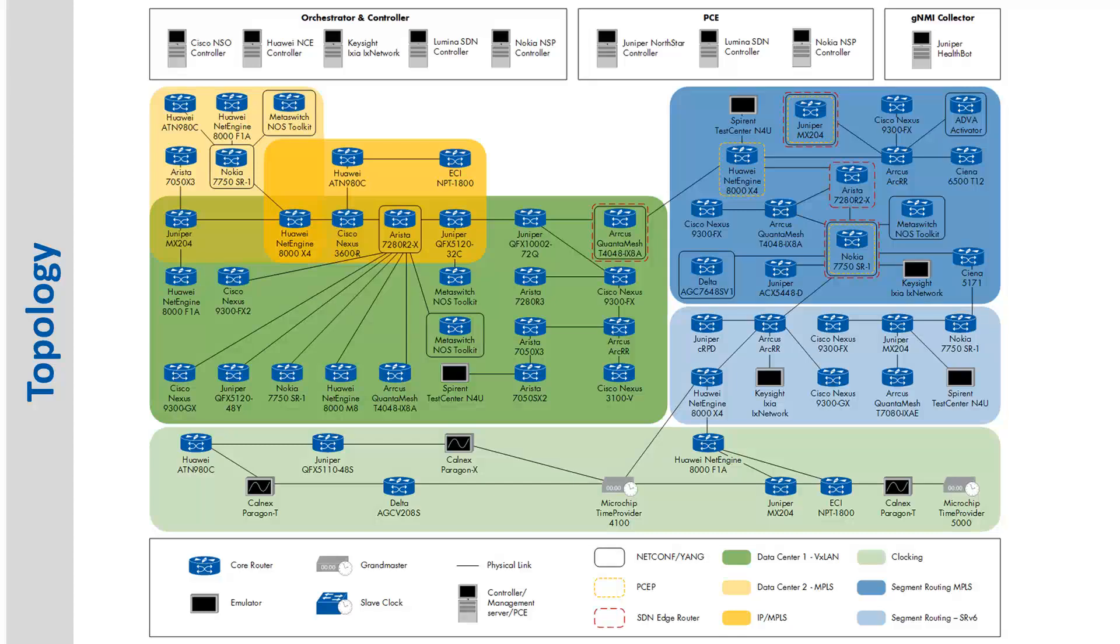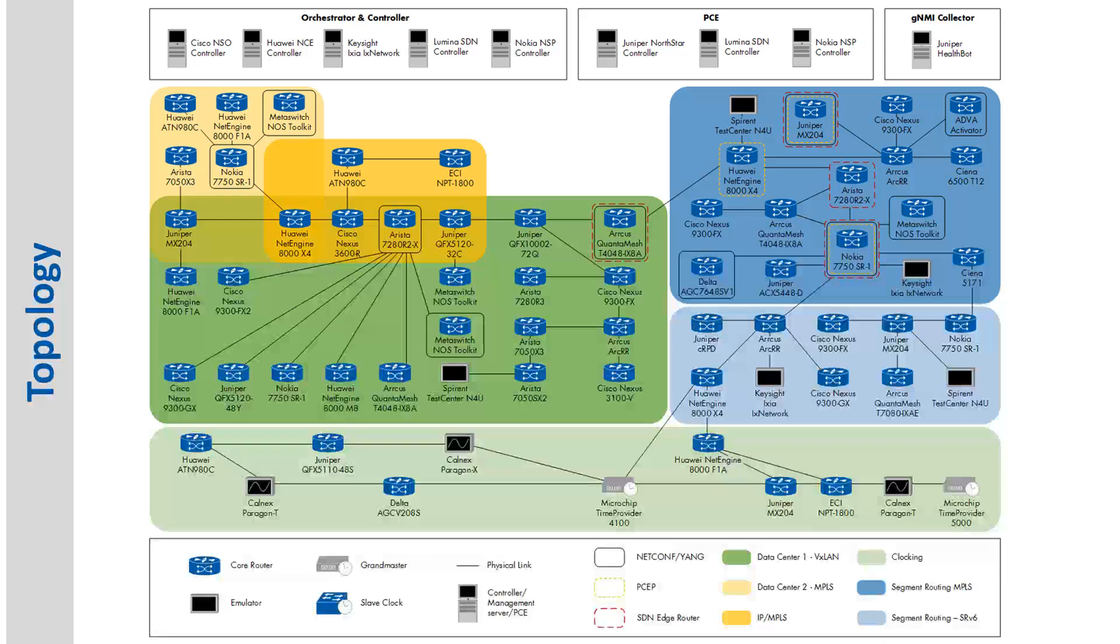If you look at the topology, you can see different areas. The blue area in the top right is the segment routing area, MPLS based. The light blue one below is the SRv6, segment routing over IPv6 area, which has grown substantially this year with new vendors participating. The green area is the data center area, VXLAN based segment routing. There was a ton of interest in this area as well. Finally, the yellow area on top left is the MPLS legacy area, which we use specifically for interoperability testing of the migration scenarios. In the bottom, the light green area is the edge and clocking section, which supported all of the clocking tests with Grandmaster and other devices.